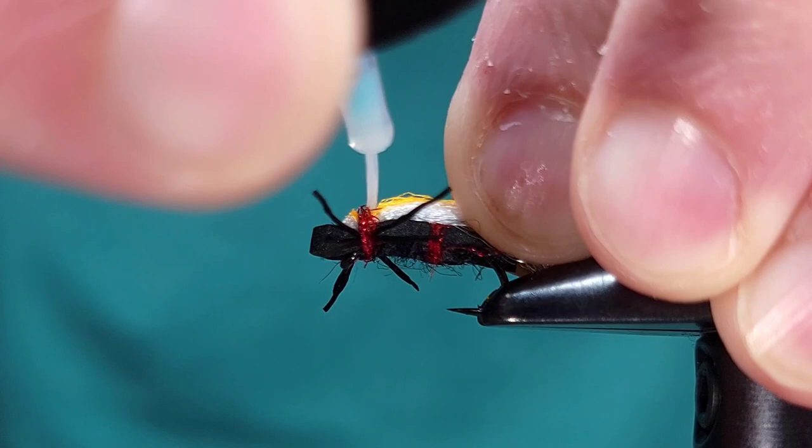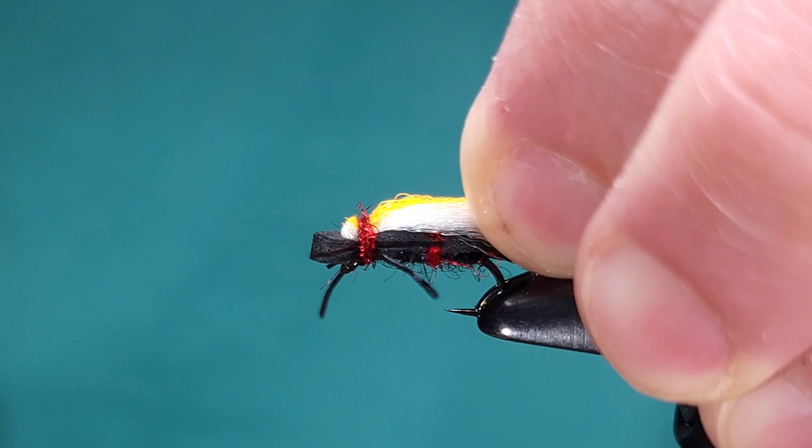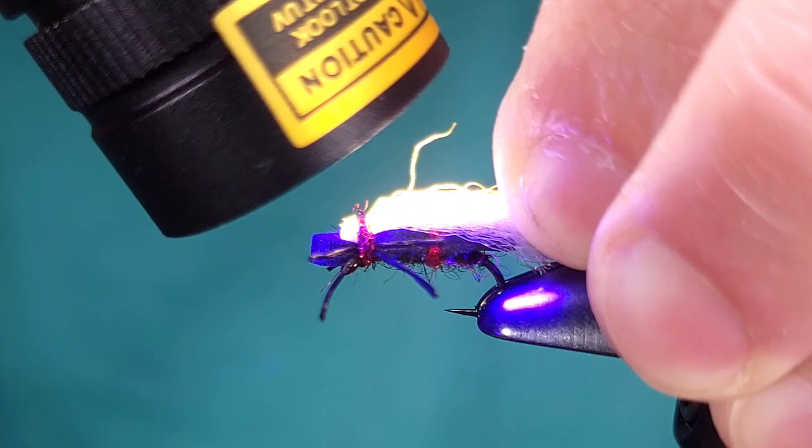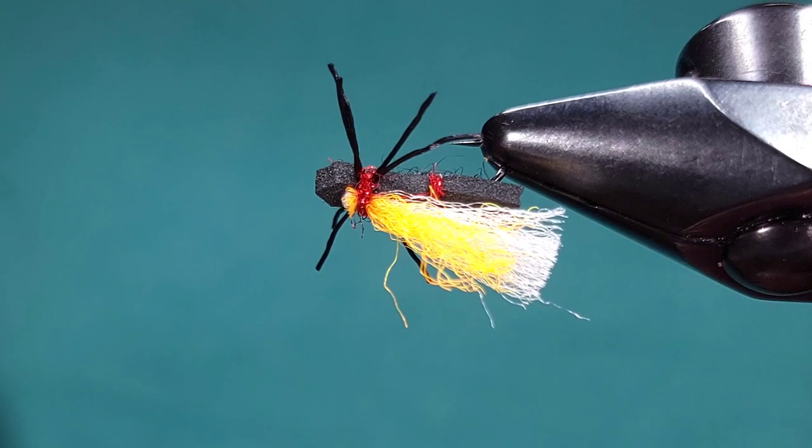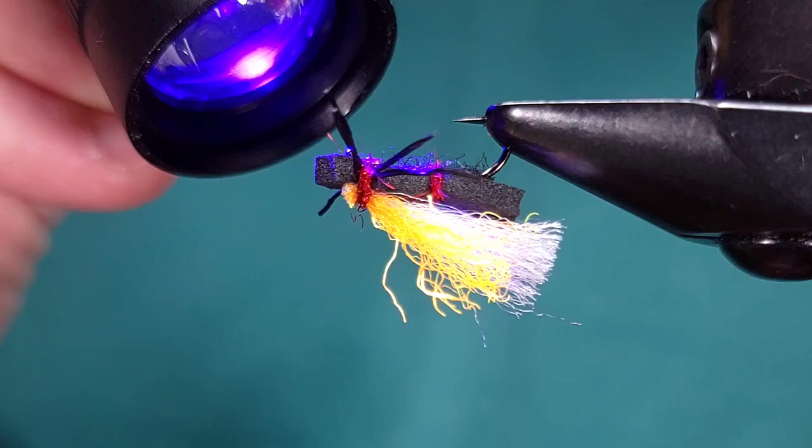So this is going to look more like a natural little black stone or just a smaller stonefly, beetle, ant, whatever you want it to look like, whatever the fish thinks it will look like. But you can see now that that wing just lays very flat and is going to stay in that position unlike a traditional chubby where you have that really high puffy wing. This is just a personal preference.